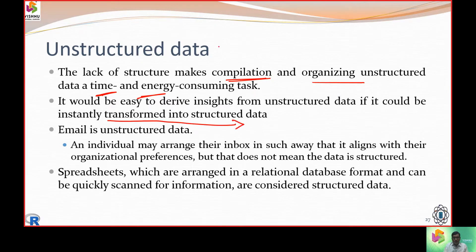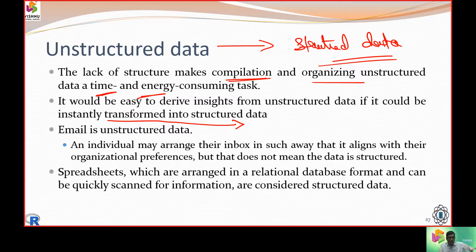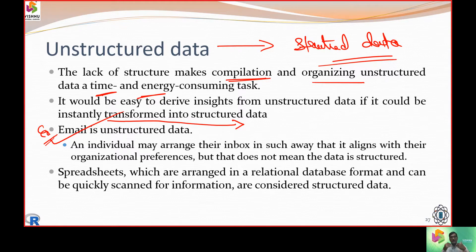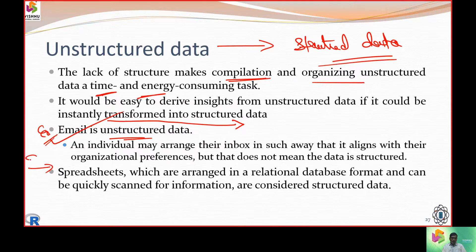The data has to be transformed from unstructured data to structured data. Email is a classic example of unstructured data. Even though we classify emails into inbox, promotions, updates, and spam, we still need to work with the text inside. Based on the content only, we get meaningful insight — that is why email is a classical example of unstructured data.